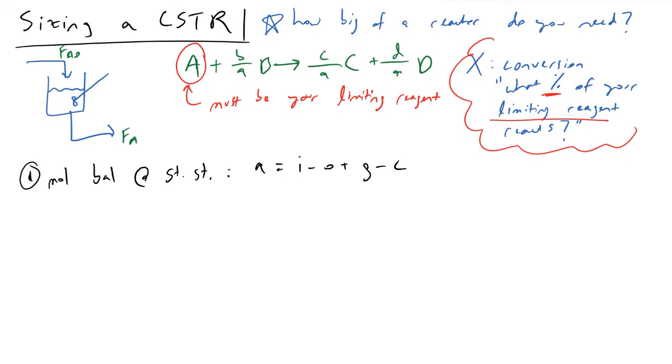A caveat here that is a very important point to hit home is that A must be your limiting reagent. You need to check your stoichiometry, you need to check your inlet conditions and make sure that you have correctly identified your limiting reagent before performing these calculations, otherwise you can arrive at a very wrong answer.